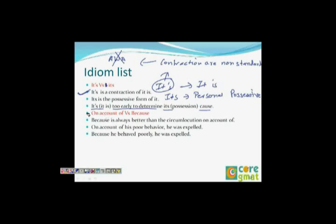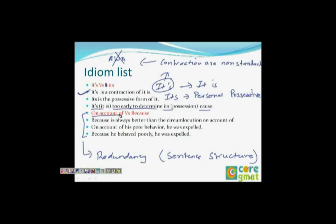On account of vs. because: 'on account of' is three words, while 'because' is just one word meaning the same thing. On GMAT, always prefer fewer words, so choose 'because' over 'on account of.' This applies about 98% of the time. If you see 'on account of' underlined in an answer choice, look for a 'because' option and see if it fits the structure.